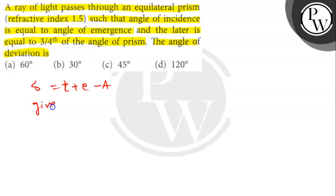Here, given I equals E equals 3/4 A. So delta will be 3/4 A plus 3/4 A minus A. The angle A will be 60 degrees.